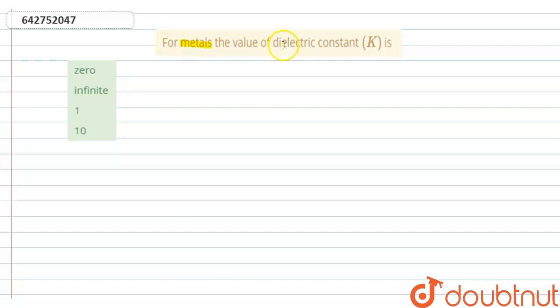metals, the value of dielectric constant k is... Right, we should remember that dielectric constant k for metal is infinite.